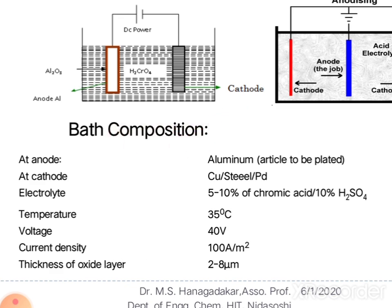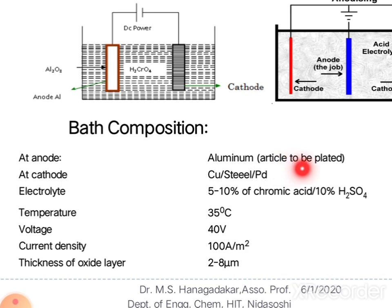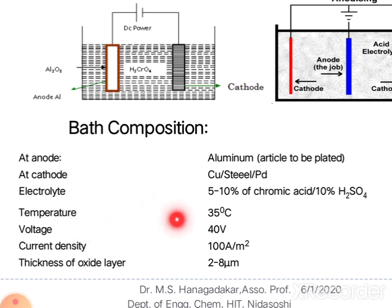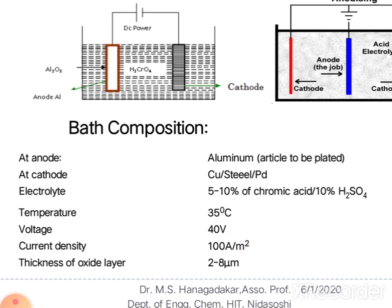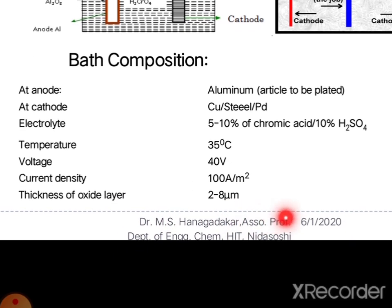Regarding the bath composition: at the anode side, the aluminium article is to be plated; at the cathode side, copper, steel, or palladium is used as electrode. The electrolyte is either 5–10% chromic acid or 10% sulfuric acid. The temperature of the bath must be maintained at 35°C. The DC power supply voltage is 40 volts. The current density per unit area of the substrate surface is 100 amperes per square metre, and the thickness of the oxide layer formed is 2 to 8 micrometres.